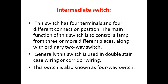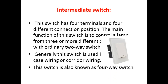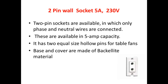The main function of this switch is to control a lamp from three or four different places, so the intermediate switch is used. The material is the same — the base is made of porcelain and the cover is made of metallic brass. This switch is made for double staircase wiring or corridor wiring.